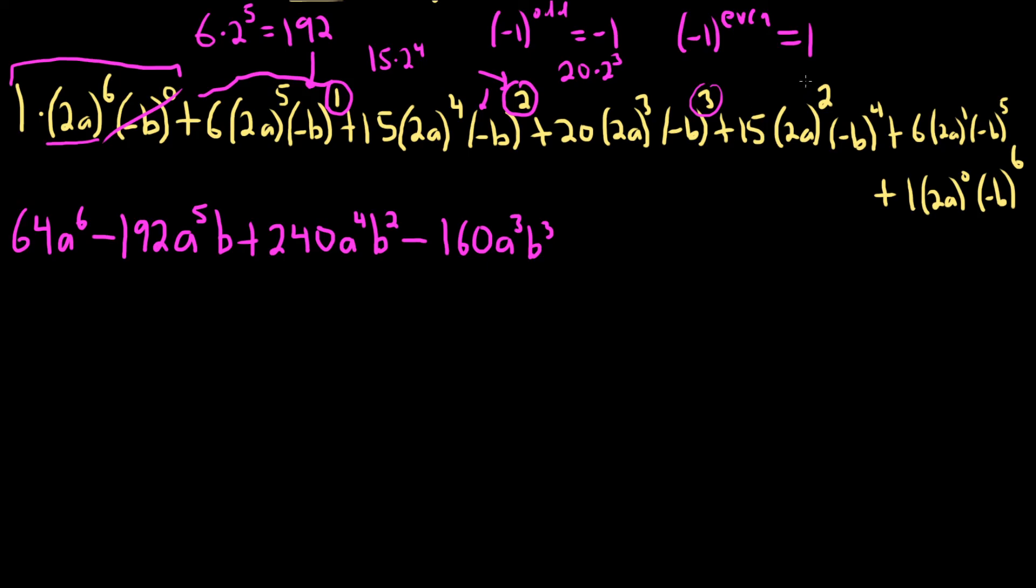So now we're here. So this is done. So now we're almost there. The next one's plus because it's a 4. So plus 15 times 2 to the 2 squared. There's a 2 there. So 15 times 4. So 60. That's 60. It's 60. And then a squared. B to the 4th.